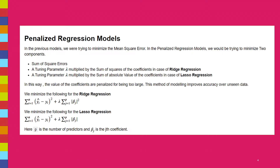Note that the coefficients are penalized for being too large — this method of modeling improves accuracy over unseen data. Mathematically, instead of minimizing just the sum of squares, we minimize: the sum of (y_hat_i - y_i)^2 plus lambda times the sum of squared coefficients (for Ridge). It's a fancy equation but a simple concept: sum of square errors plus lambda times the sum of squares of coefficients for Ridge, and lambda times the sum of absolute values of coefficients for Lasso.